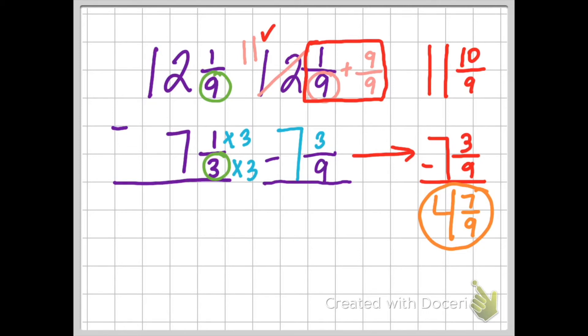This is why we often use grid paper, because look how many steps I had to do. I first had to rename my denominators. Then I had to borrow and regroup my fractions. And after I was able to borrow and regroup my fractions, I then was able to subtract.